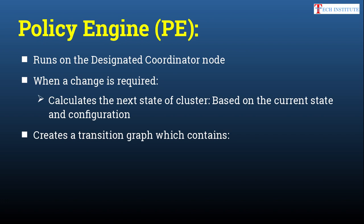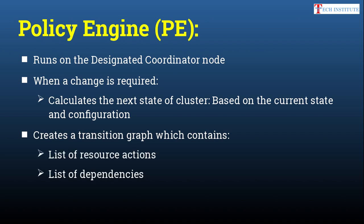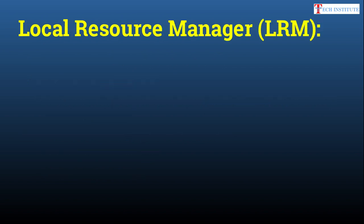The Policy Engine creates a transition graph containing a list of resource actions and dependencies. Resource actions include start, stop, or monitoring running on all nodes. Dependencies are also tracked — for example, if you put a web server as a clustered resource, you first need the shared file system, then the virtual IP, then the web service to come up. Without the file system, the web content won't be accessible, so there is no point starting the web service — these dependencies are calculated via the Policy Engine.